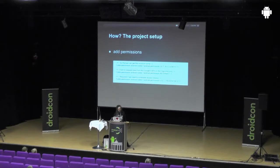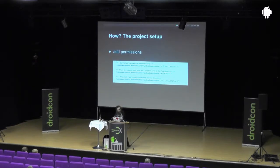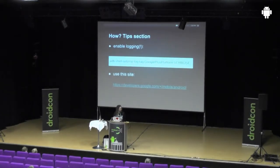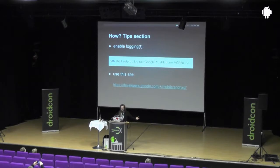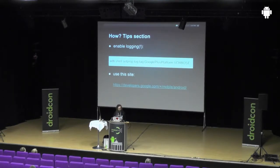The next thing you have to do is add permissions — obviously only if you don't already use them. First, it's GET_ACCOUNTS, so you can choose an account since you can have multiple accounts on the phone. Then you obviously need internet because you have to talk to the Google service. And you need USE_CREDENTIALS to revoke tokens. Some tips: it's very important to enable logging because otherwise stuff will fail very silently and you'll just wonder what happened. For example, if you write a moment and haven't specified the activity type, it doesn't tell you it's wrong — it just fails. When you enable logging, it's not crashing but you see it in ADB logcat. And this site is very handy for documentation.